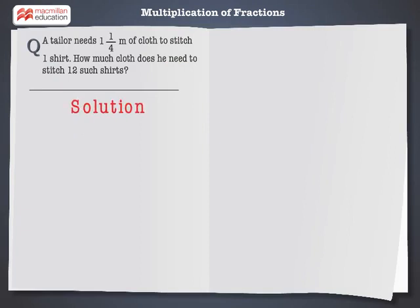Let's solve the problem. We know that to stitch 1 shirt, the tailor required 1 and 1 by 4 meters of cloth or 5 by 4 meters of cloth.